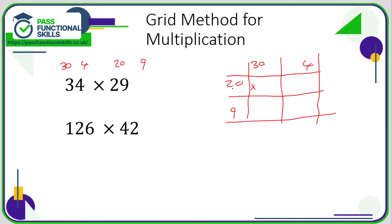One reason I tend not to teach this method is because a lot of people get the very first calculation wrong: 20 times 30. 2 times 3 is 6 but we've ignored two zeros, so we need to put two zeros back — that is 600. So many people just give me 60 or 6000. This part often goes wrong. 4 times 20 is 80. 30 times 9: 3 nines are 27, so 30 times 9 is 270. And 4 times 9 is 36.